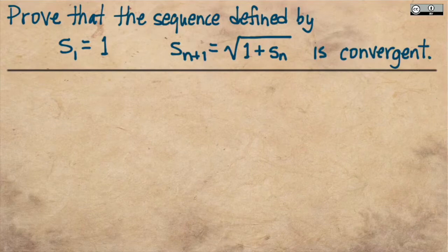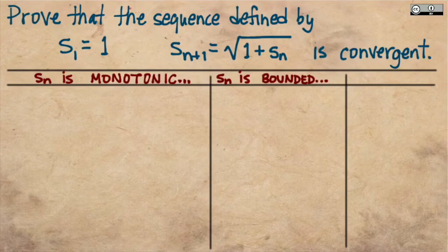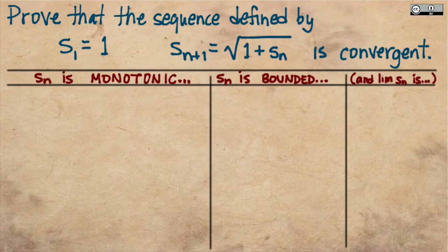We're going to have to verify both conditions of the monotone convergence theorem for this recursively defined sequence. We need to first prove that the sequence is monotonic, then prove that the sequence is bounded. If we can do those two things, the monotone convergence theorem will guarantee convergence. As icing on the cake, we can also use some algebra to figure out what the actual limit of the sequence is — but first things first: we must establish monotonicity and boundedness.